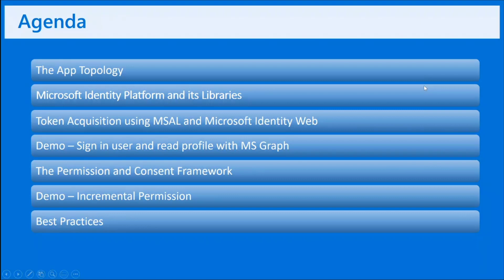Let's have a quick look at the agenda. We'll talk about the app topology, then what Microsoft Identity platform is and what libraries are available. Then we'll see how token acquisition happens with these libraries, followed with a small demo. After that, we'll talk about the permission and consent framework, a small demo on incremental permission, and finally we'll wind up with the best practices.